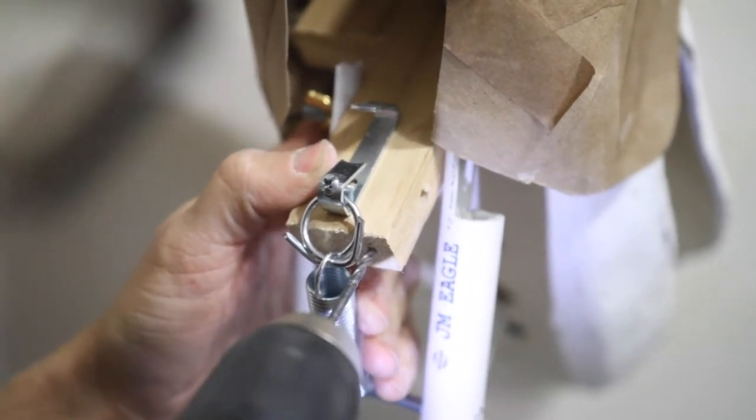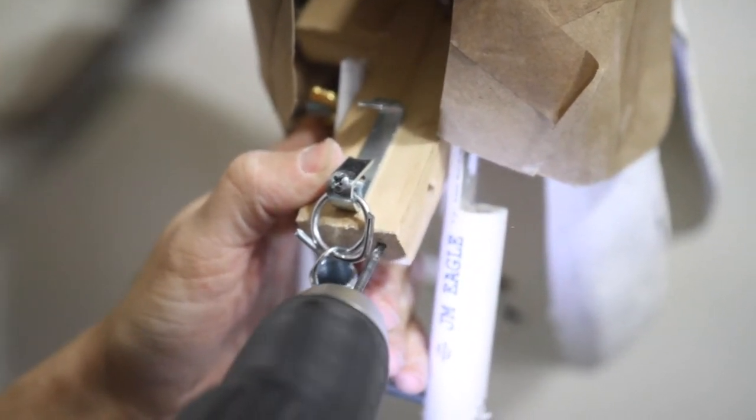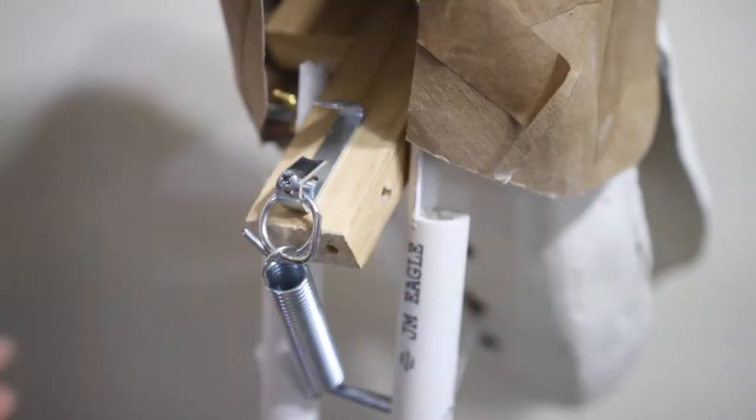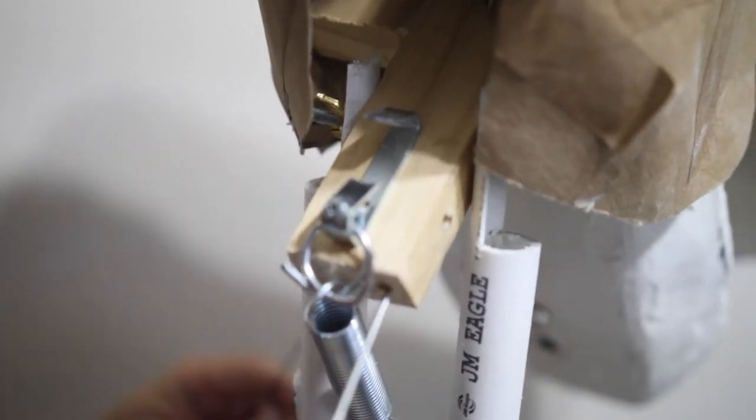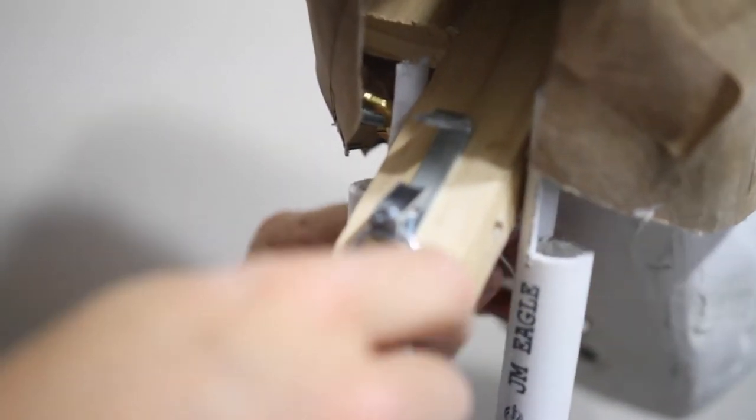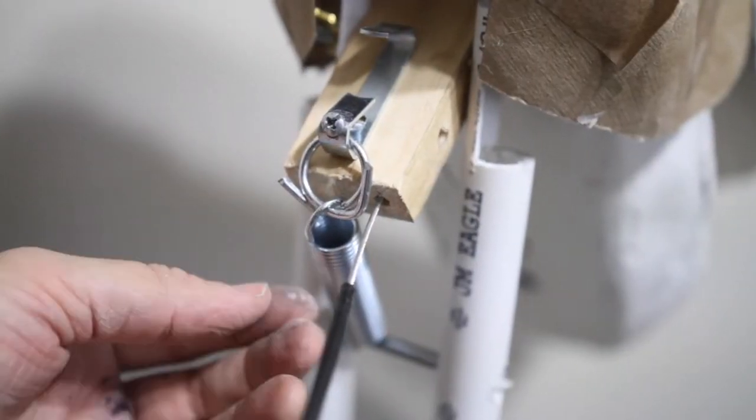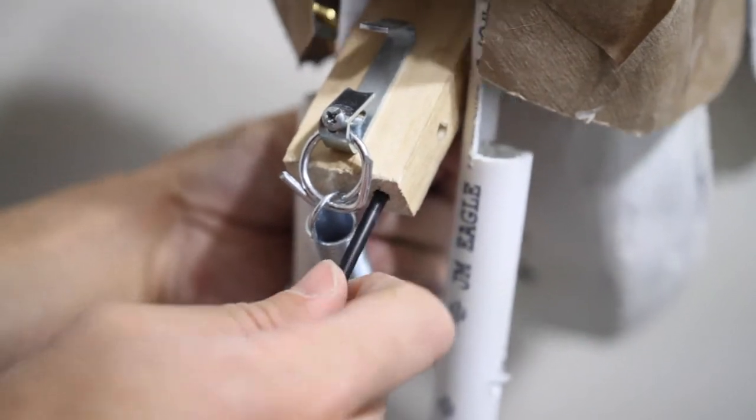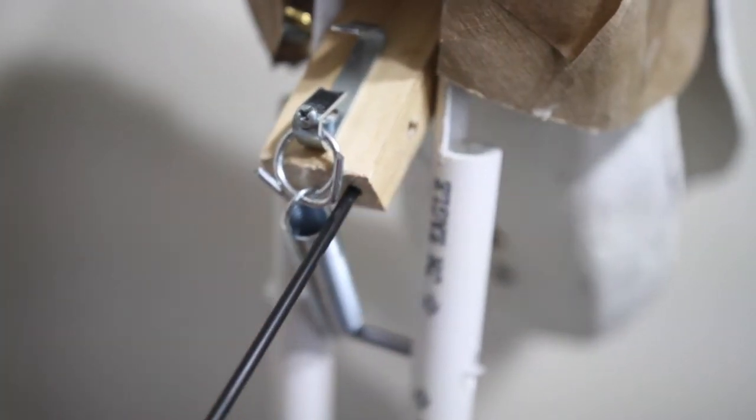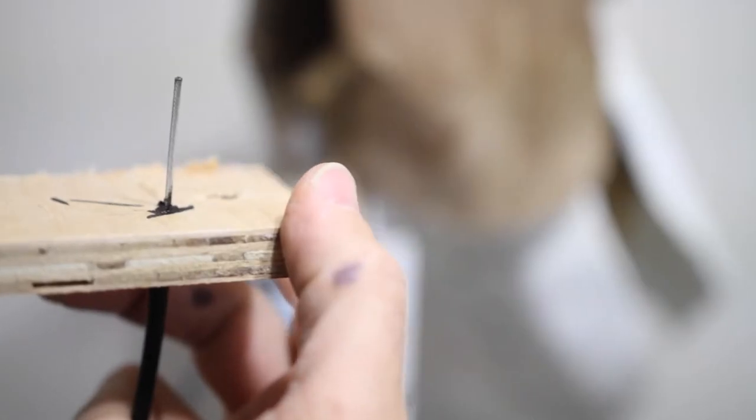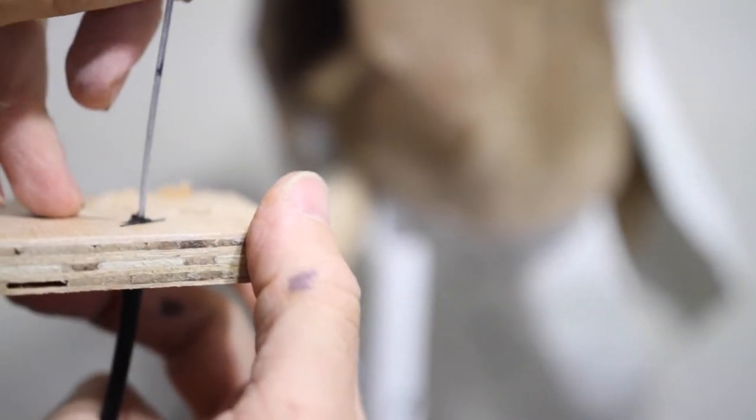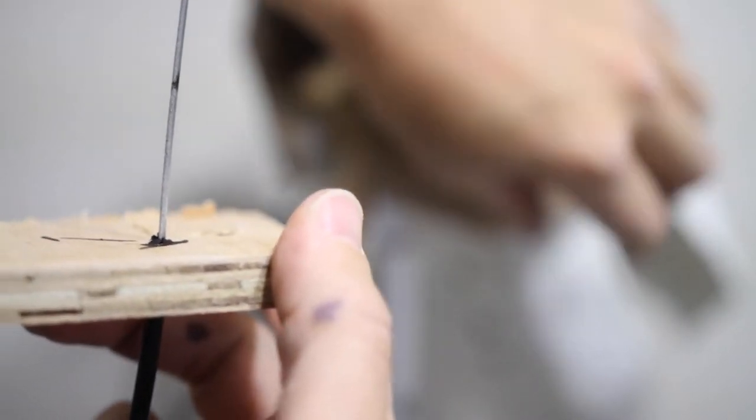I drilled one hole all the way through the wood here, and then I took a larger bit and just went in like a quarter inch. Then I fed the cable all the way through. Then I fed the cable through the casing and pushed it all the way up into the wood and it stops. It looks kind of similar on the other end. You can see here that when I close the mouth it pulls the cable.